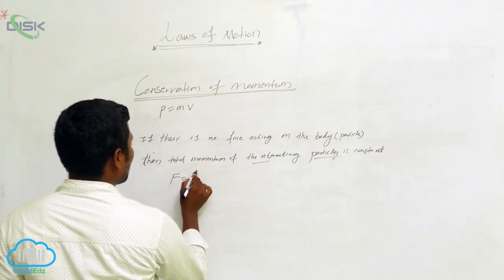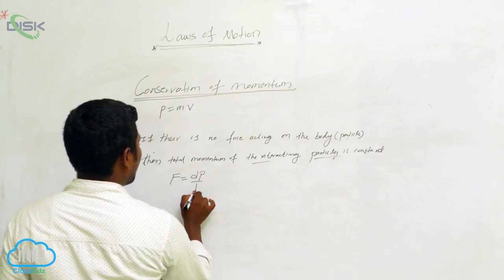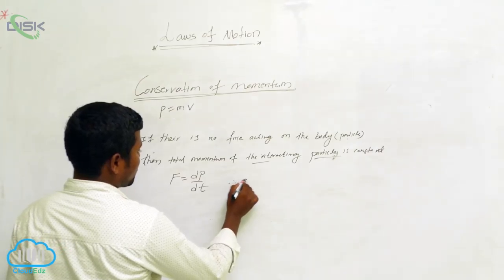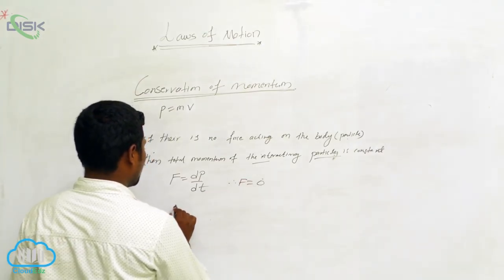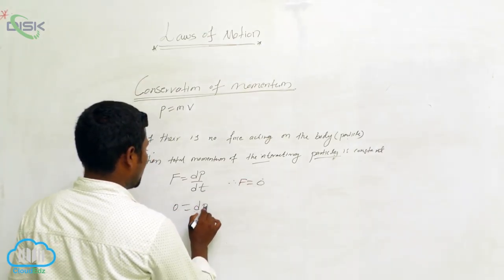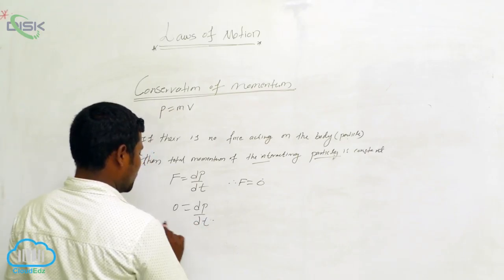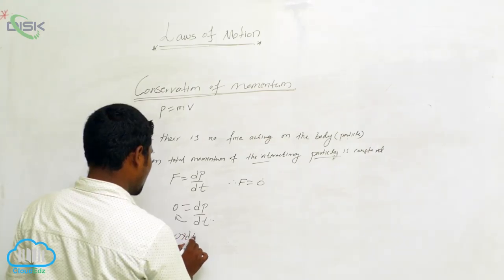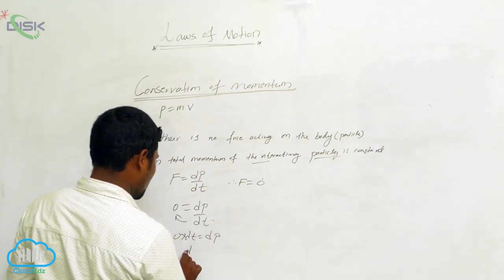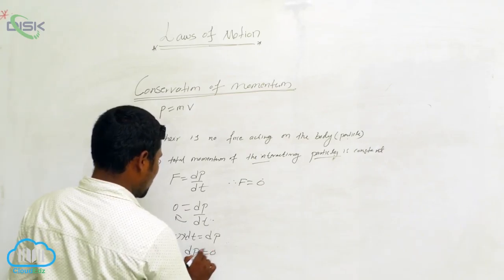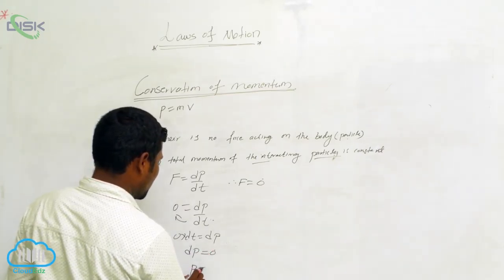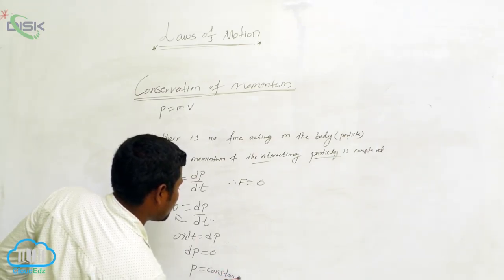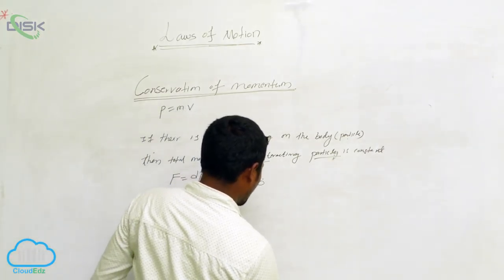If there is no external force, then F is equal to dp by dt. Since F is equal to zero, dp by dt is equal to zero. Rearranging: zero times dt equals dp, so dp equals zero. Taking integration, p is equal to constant. Hence proved.